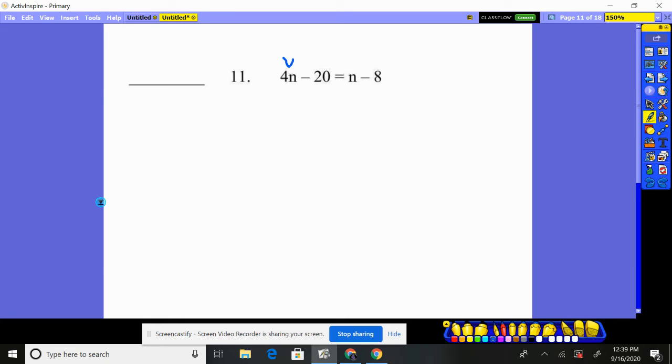Number 11, again, variable, number, variable, number. Get all your variables to one side, all your numbers to the other. I'm going to start by taking n, a single 1n away. That gives me 3n minus 20 equals negative 8. Don't forget, you've got to pay attention to what's in front of the number to determine whether it's a positive or negative number. In this case, that's a negative 8.